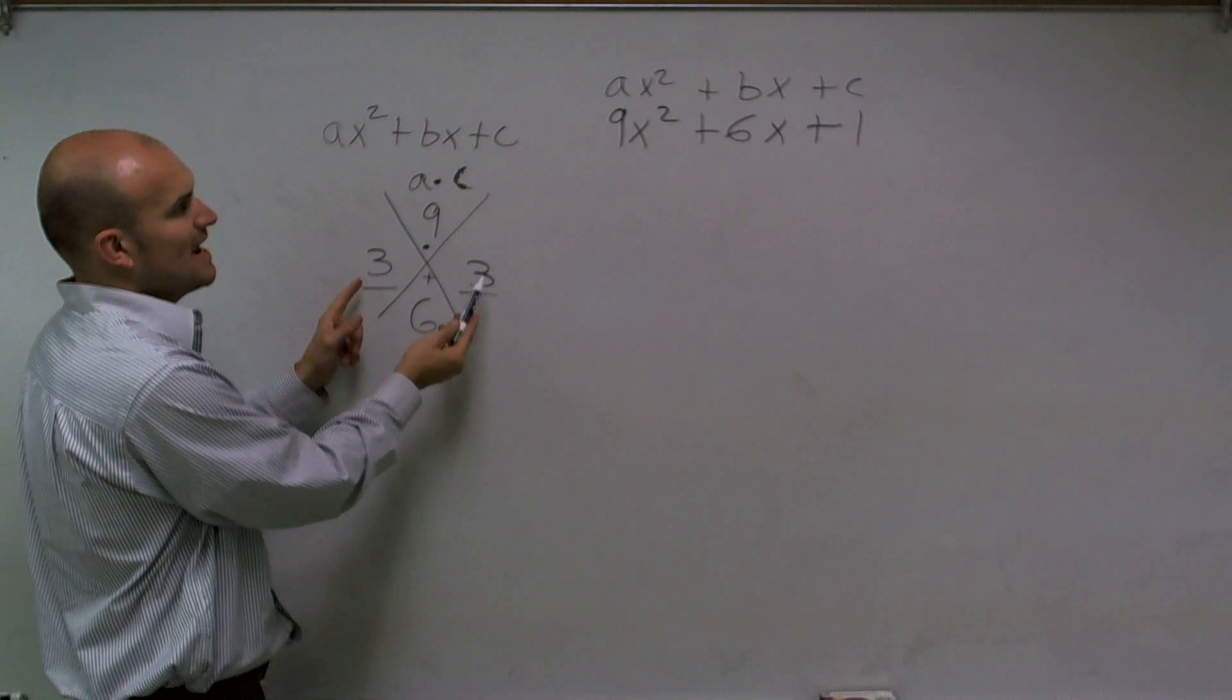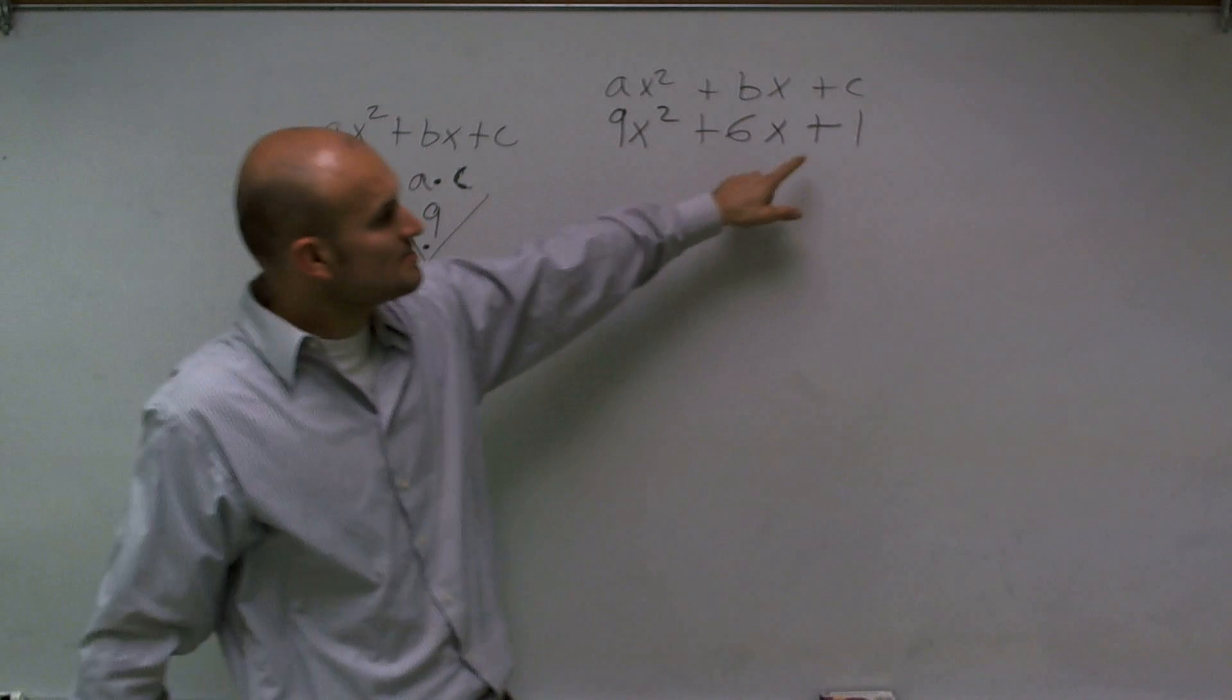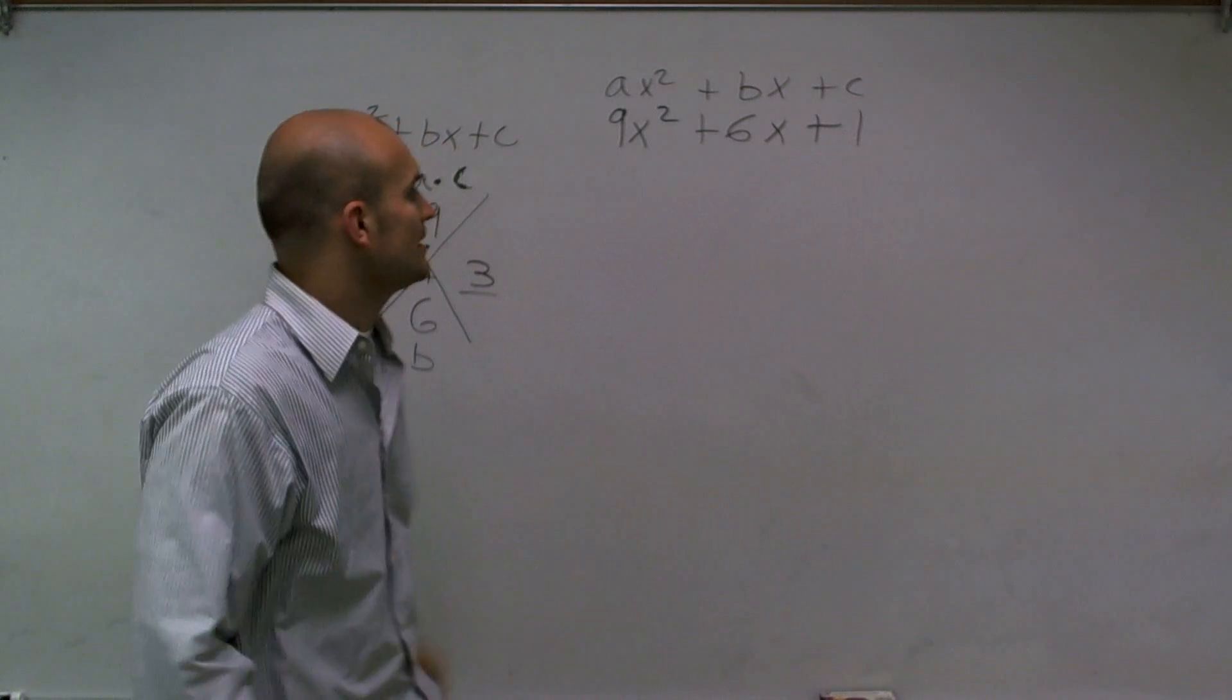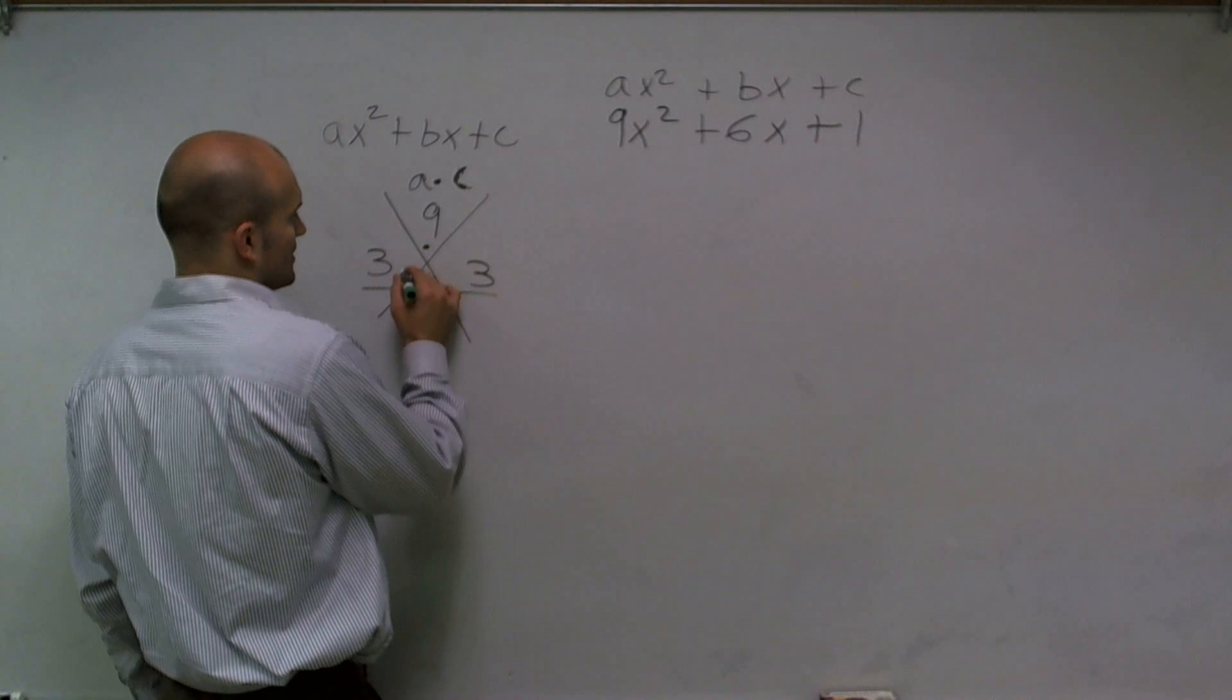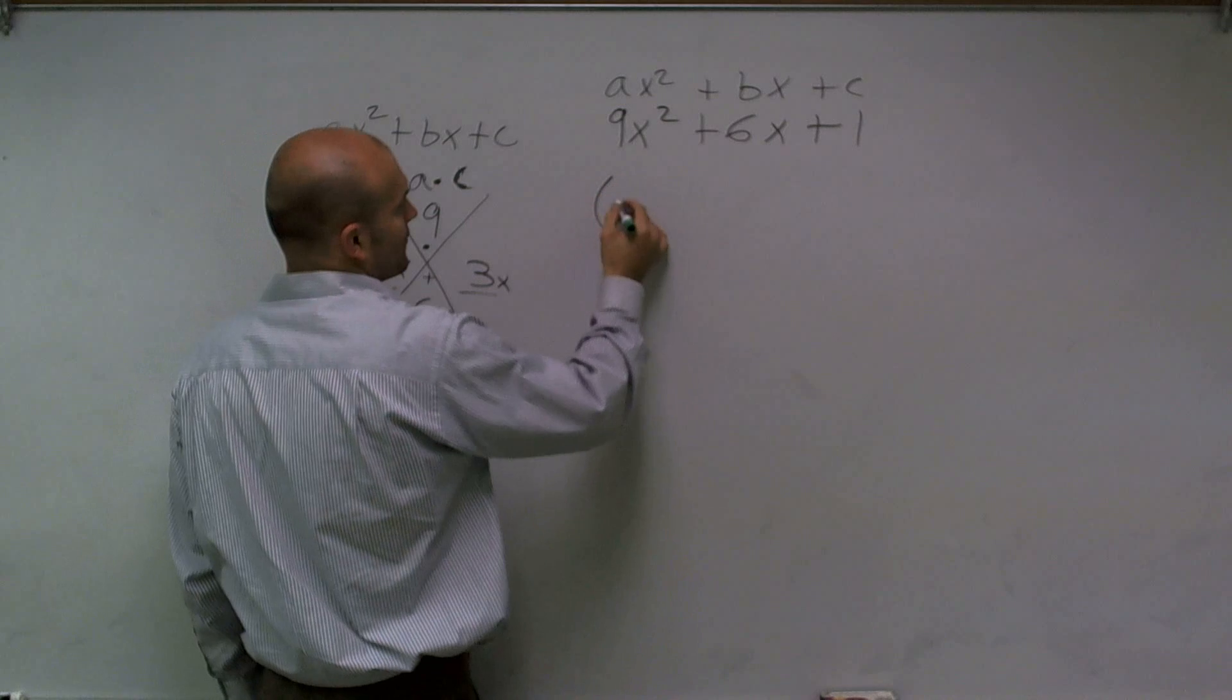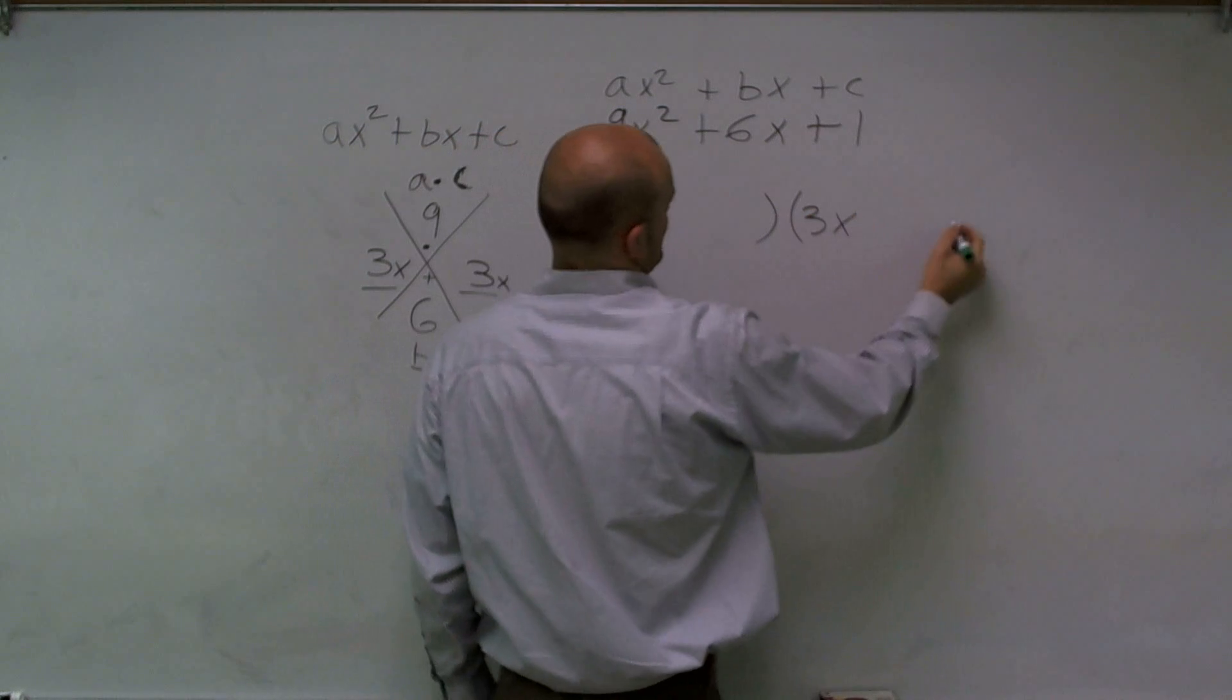Now remember, those two numbers have to multiply to give me my a times c. Well, since my c is going to be 1, here I can just have them as my two x's, so it would be my 3x and my 3x. Therefore, I can set that 3x times 3x.